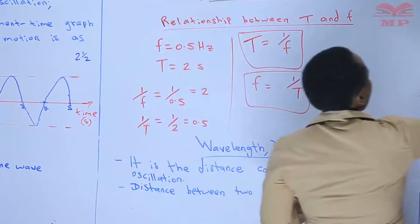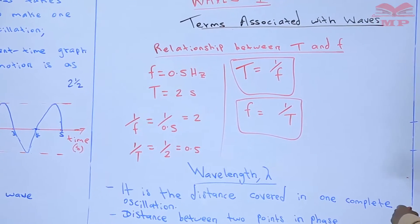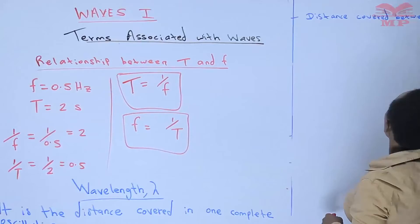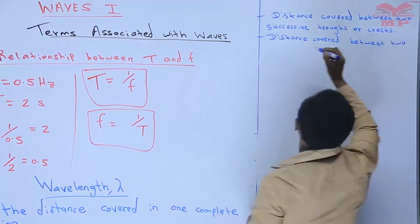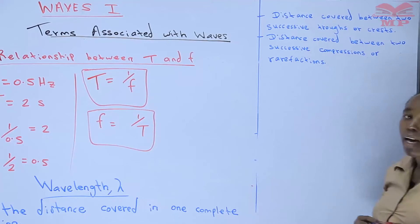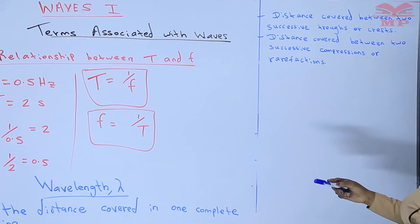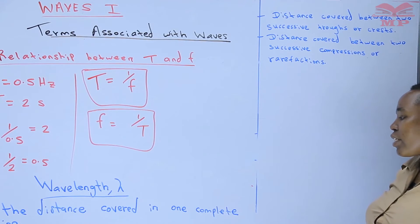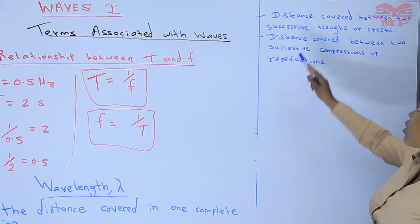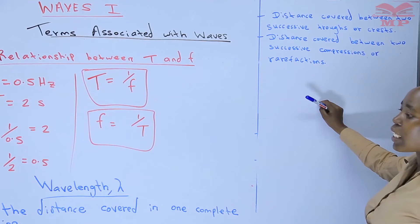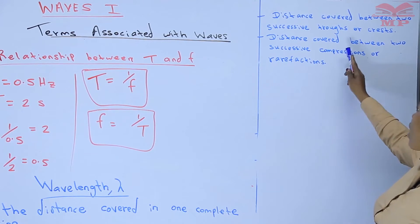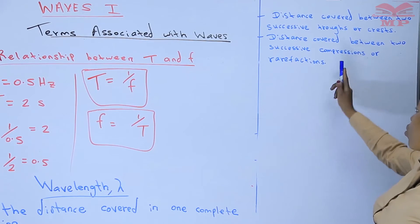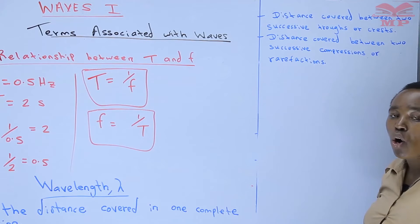So we can define it further — all those are definitions for wavelength. You can give any of them. We are also saying that wavelength is the distance covered in one complete oscillation. We can also say it is the distance between two points in phase, or the distance covered between two successive troughs. The distance covered between two successive compressions or rarefactions is for the case of a longitudinal wave.